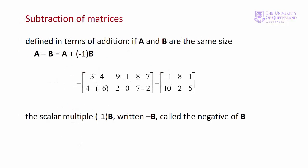We define subtraction in terms of addition. Subtracting matrix B from matrix A is the same as multiplying matrix B by the scalar of minus 1, and then adding. We have A minus B is equivalent to A plus minus 1 times B. We multiply each element in B by minus 1, and then add.